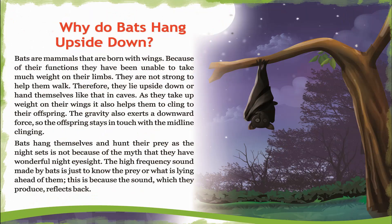Why do bats hang upside down? Bats are mammals that are born with wings. Because of their wing structure, their limbs are unable to bear much weight, and are not strong enough to help them walk. Therefore, they hang upside down in caves, taking weight on their wings instead.